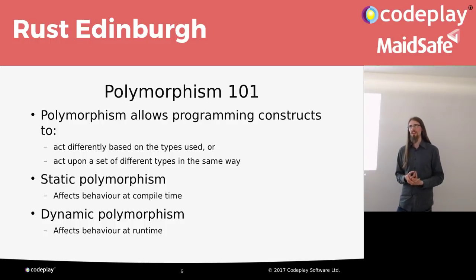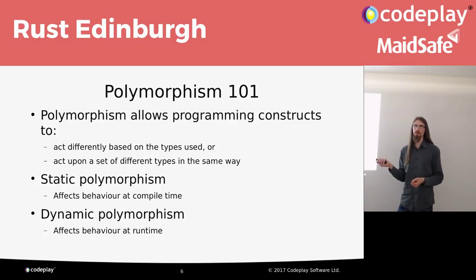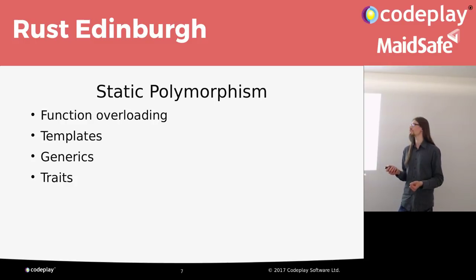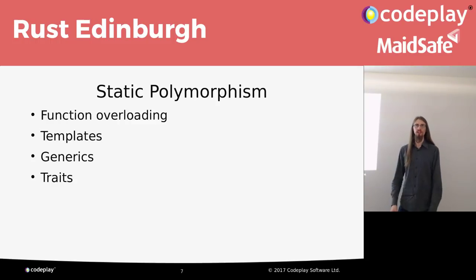Polymorphism - my short definition is it allows constructs to either act differently based on the types which are used, or to treat some set of types with the same interface. I'm mostly going to make a differentiation between static polymorphism, which operates at compile time, and dynamic polymorphism, which operates at run time. Some examples of static polymorphism: function overloading is a very simple one. In C++ you can use the same name for functions which take different types, they can even return different types.